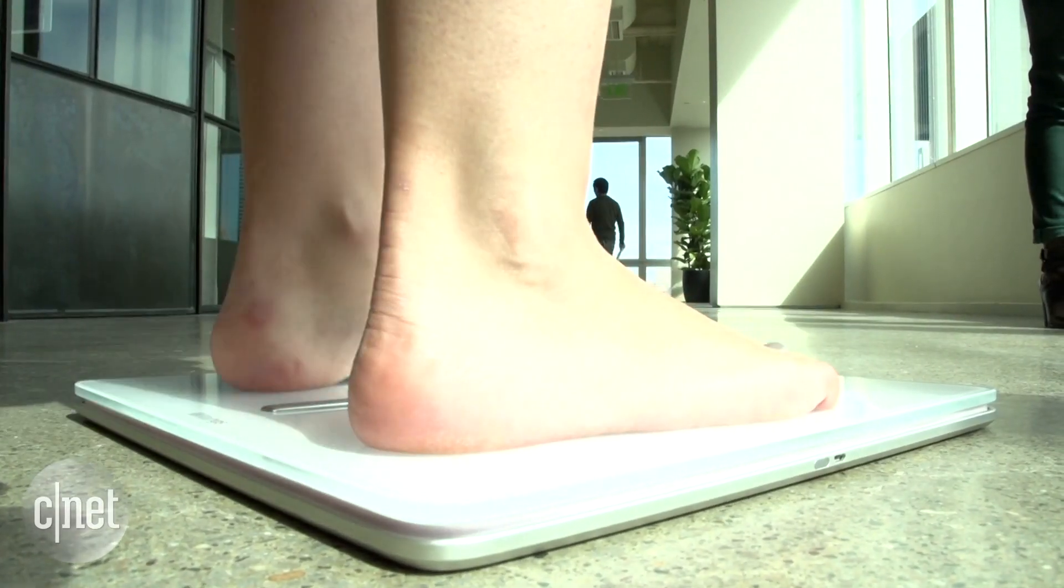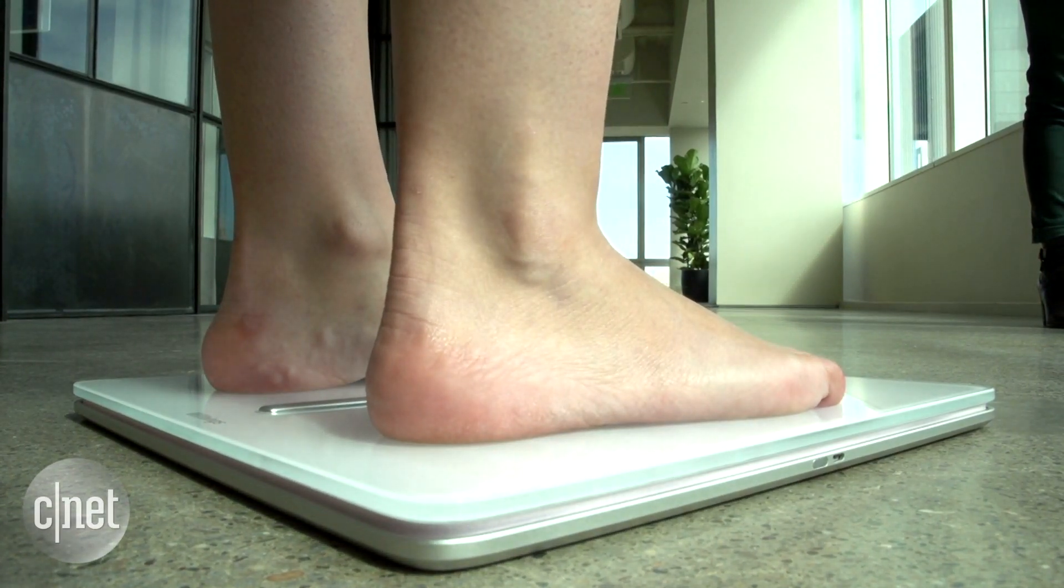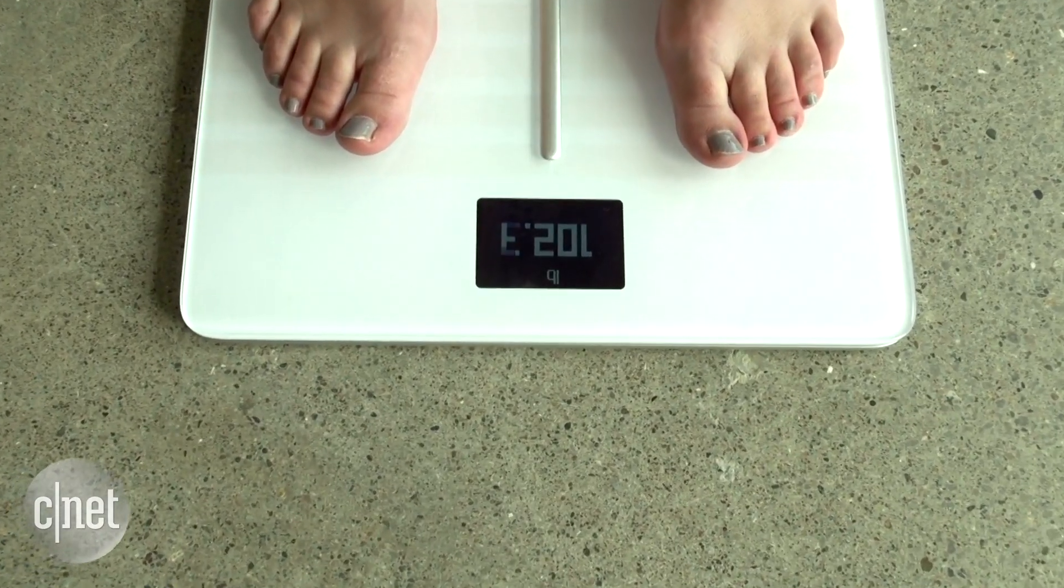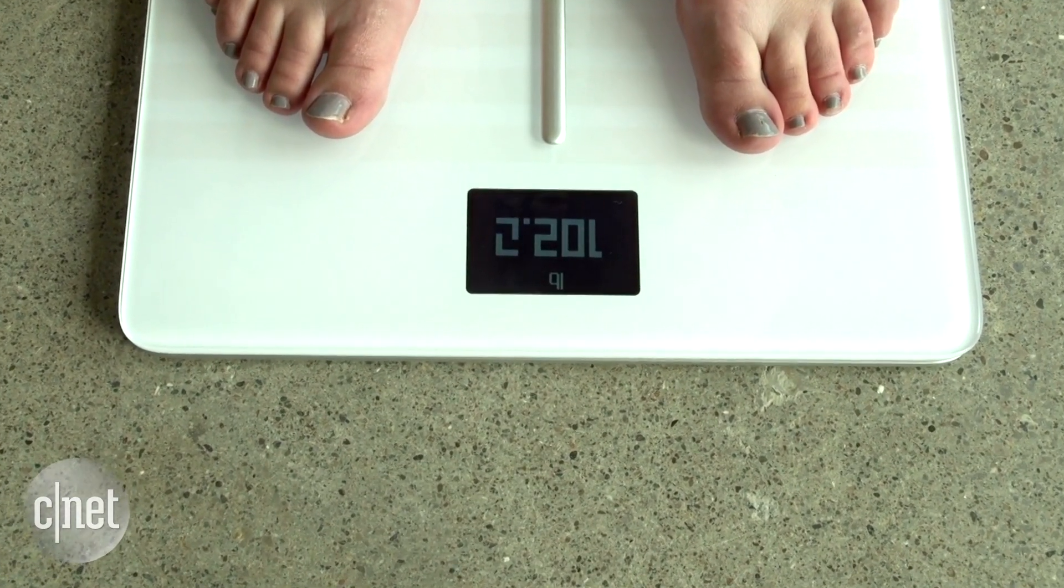If the scale and your phone are connected to the same Wi-Fi network, it can also show you the weather as part of your morning routine to save you a step from having to look it up.